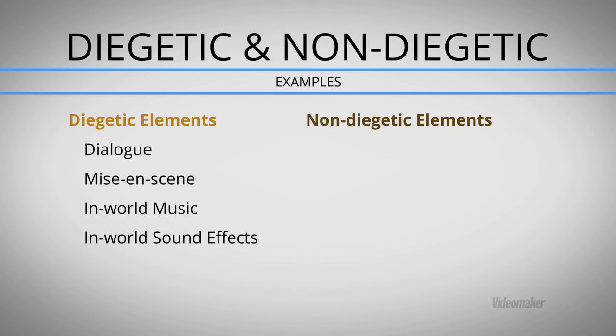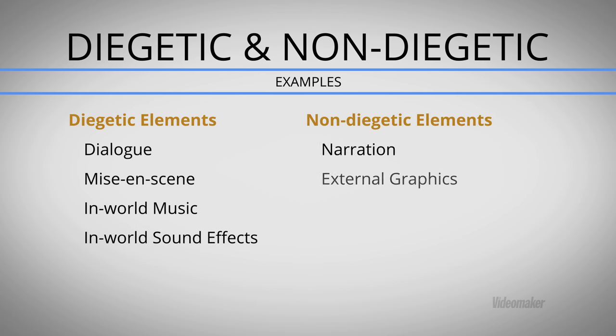Non-diegetic is anything outside the story — still within the film, still part of the film, but not inside the world of the story. To get a better idea of how this concept works and where these definitions might get a little blurry, let's look at a couple examples.